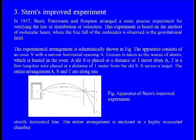In 1947, Stern and Simpson arranged a more precise experiment for verifying the law of distribution of velocities. This experiment is based on the method of molecular beam, where the free fall of the molecules is observed in the gravitational field. They exploited the free fall of the molecular beam in the presence of a gravitational field.